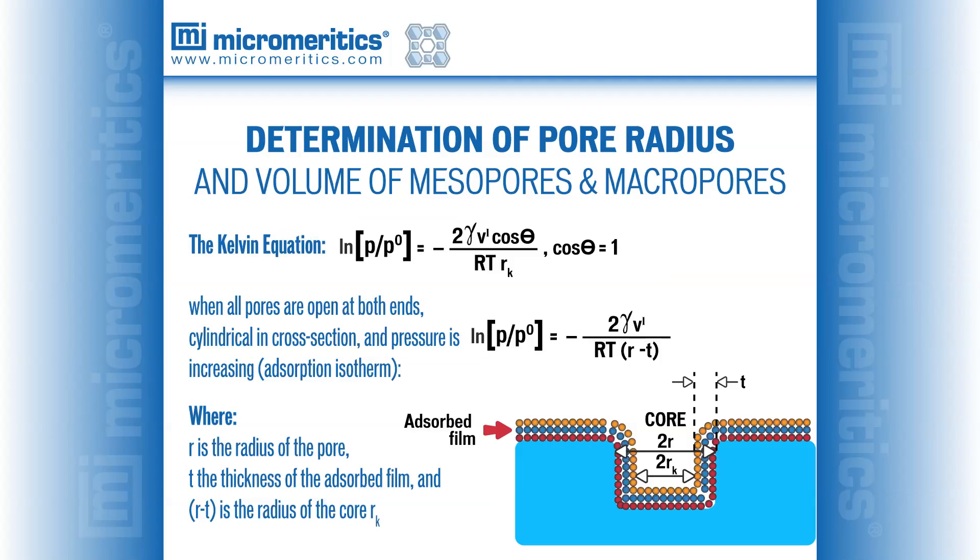The pore size may be estimated using the Kelvin equation, in which gamma and theta are the surface tension and the contact angle of the condensed phase respectively, and V sub L is the molar volume of the condensed phase. R is the ideal gas constant, and T is the analysis temperature. The symbol R sub K represents the radius of curvature of the meniscus of the liquid condensate in the filled pore, which permits calculation of the radius of the pore.